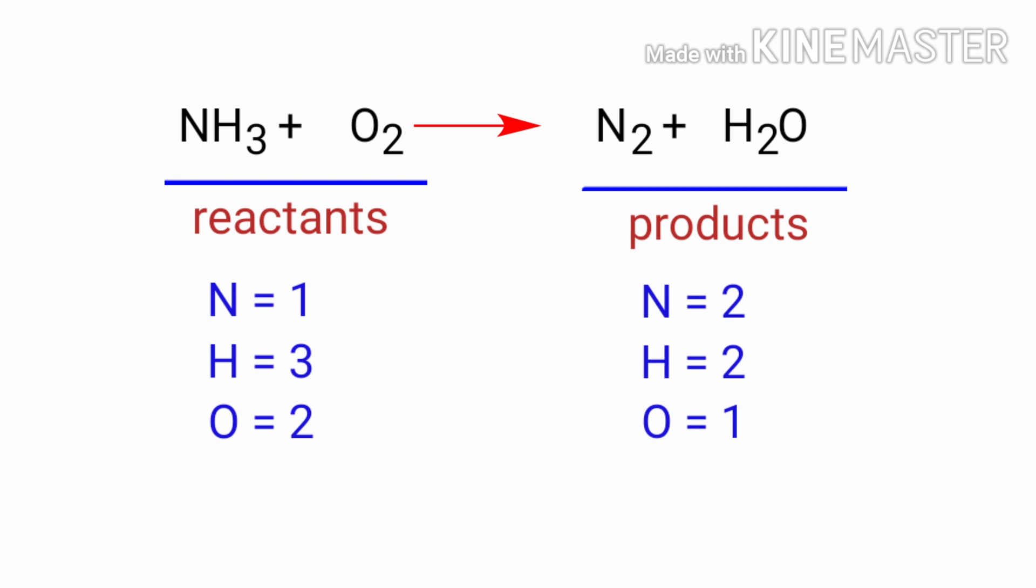In this equation, we need to balance the nitrogen atoms first. To do this, we need to put a coefficient of 2 in front of NH3. The nitrogen atoms are balanced.